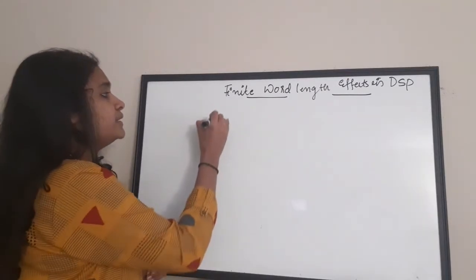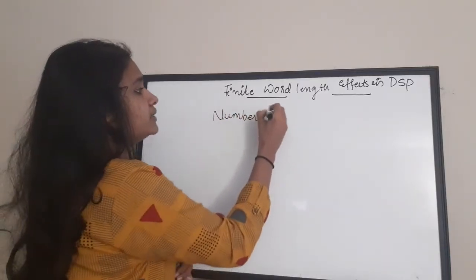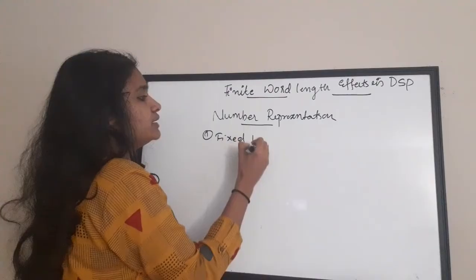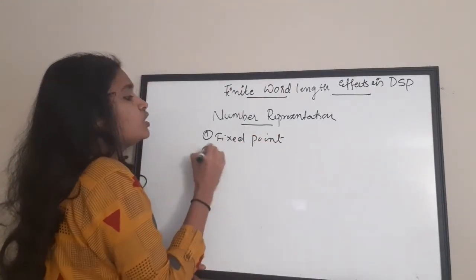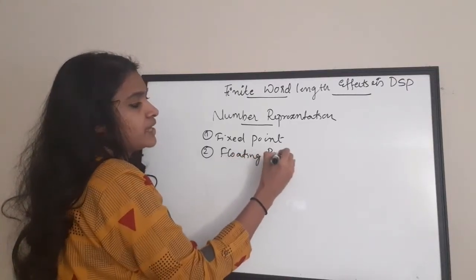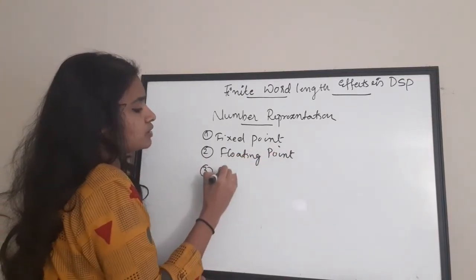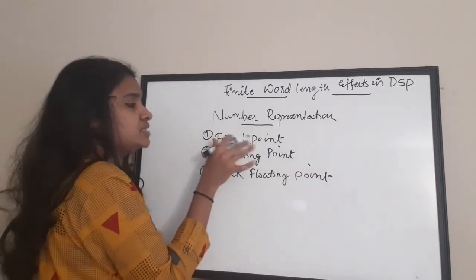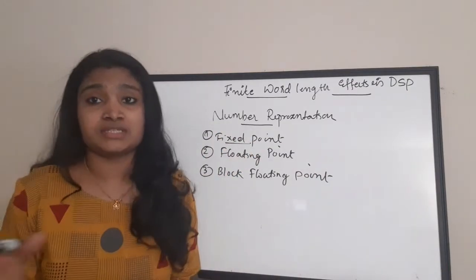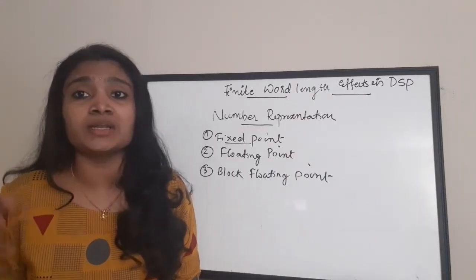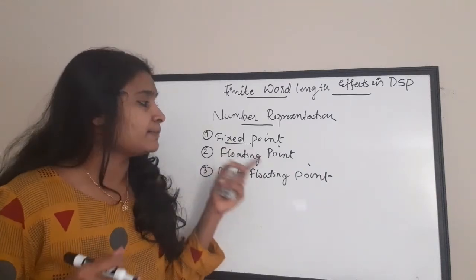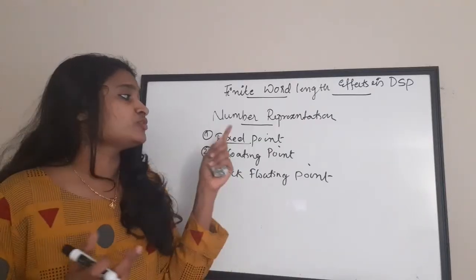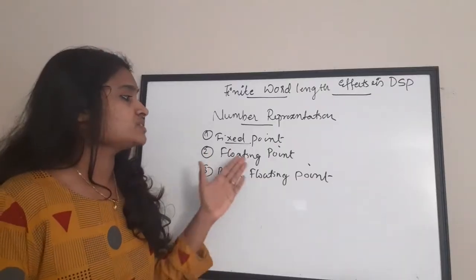There are basically three types of number representations. First one is fixed point number representation. Second one is floating point number representation. And the third one is block floating point. Fixed point number representation indicates that the point is fixed. Floating point number representation is using a mantissa and exponent. Block floating point representation is actually a combination of fixed point and floating point.